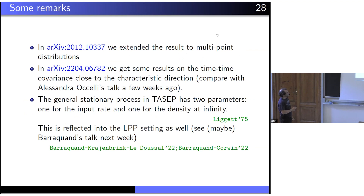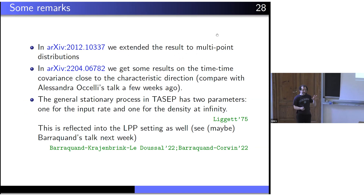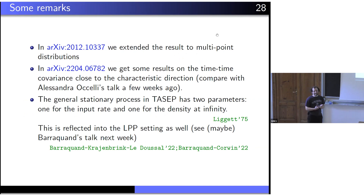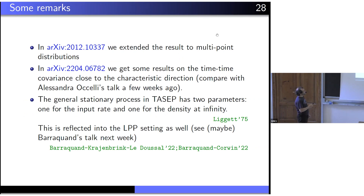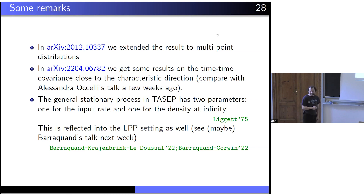In a later paper we extended the results to multi-point distributions, using analytic continuation similar to what was done for the full space. Regarding half-space KPZ at different times: in a talk by Alessandra a couple of weeks ago (available online), results were obtained about the covariance close to the characteristic for the stationary and non-point-to-point problem.